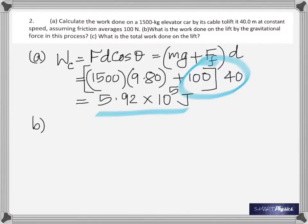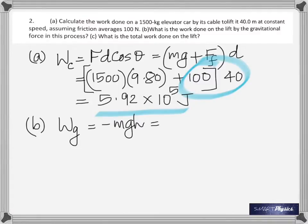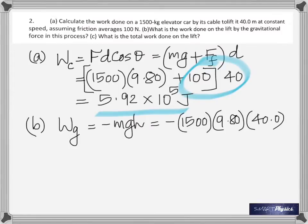That part included friction; this part is only asking about the work done by gravitation alone, so it would be mgh. But notice the negative sign — why negative? Because the elevator is going against gravity, therefore it's negative work done by the gravitational force. So that's only mgh: 1500 times 9.8 times 40, giving minus 5.88 times 10 to the 5 joules.